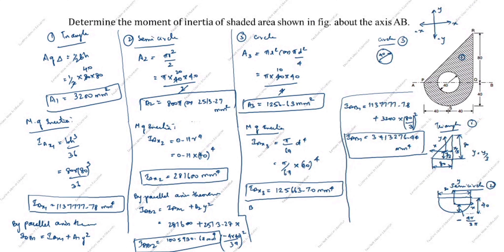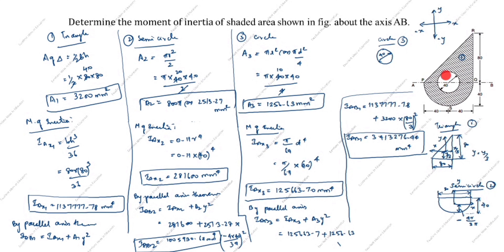By the parallel axis theorem for the circle: IAB3 = IAX3 + A3 × Y². IAX3 = 125663.70 and A3 = 1256.63. The AB line passes through the center of the circle, so Y = 0. Therefore IAB3 = 125663.70 + 1256.63 × 0 = 125663.70 mm⁴.